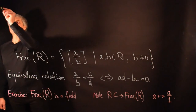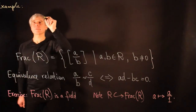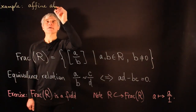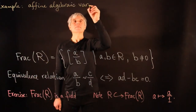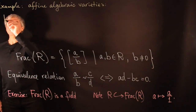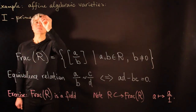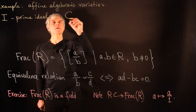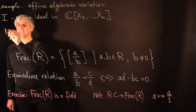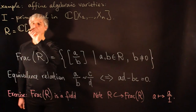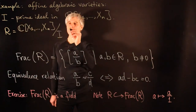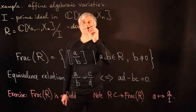Let's consider an example: the case of functions on affine algebraic varieties. Let I be a prime ideal in the polynomial ring in N variables over the complex numbers. We consider R to be the quotient ring — the ring of polynomials quotient by I. Since I is a prime ideal, R is a domain and will not have divisors of 0.